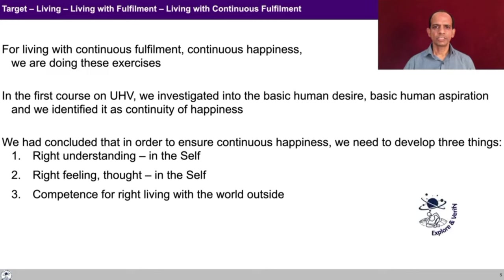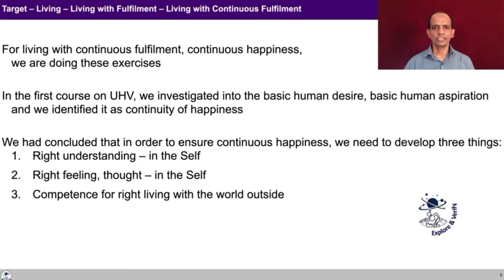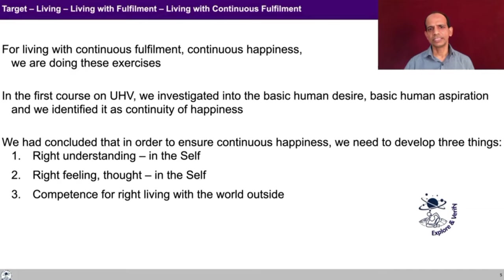Try to make it out again for yourself. To ensure continuous happiness, do we need right understanding or not — and ultimately, where is it going to be ensured, in the self or the body? Do we need to ensure right feeling and right thought? When we have right feeling and right thought, only then are we able to fulfill relationships rightly. For interacting with the world outside, we need to develop competence for right living, which includes expression in behavior as well as skills in work.